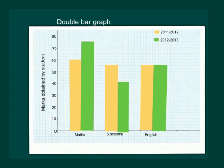And seeing the graph, we can conclude that the student made good progress in Maths from 2012-2013. He deteriorated his marks in Social Sciences and gave the same performance as 2012-2013 in English.